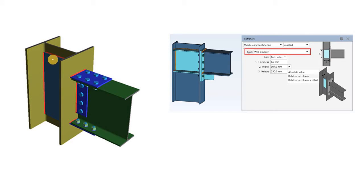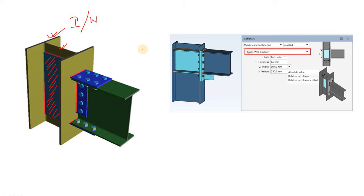The doubler plate looks like this. Here you can see a column section, which is an I-section or wide-flange section. The blue-colored plate is known as the doubler plate, which is simply welded to the web part of the column. Here you can also see the stiffener, also known as the continuity plate. In this case, both the stiffener and the doubler plate have been used.